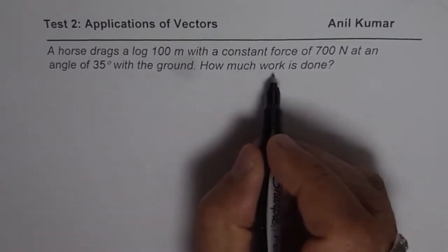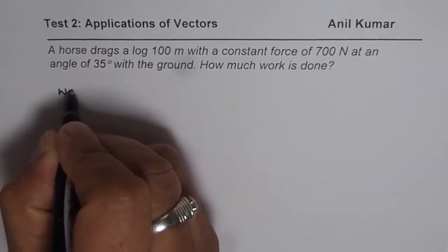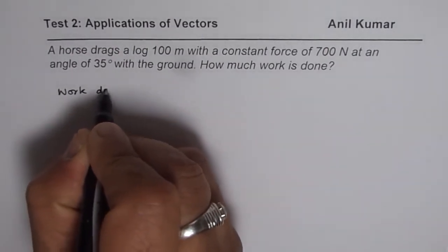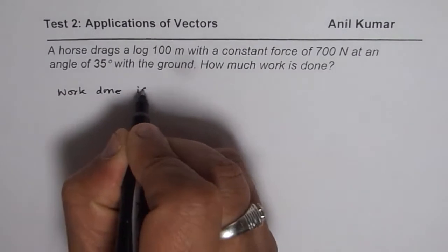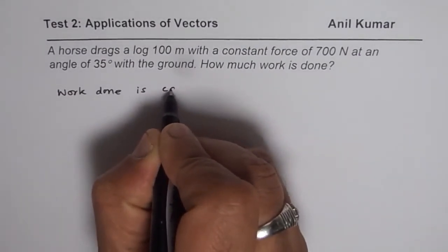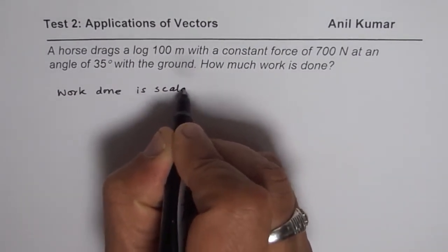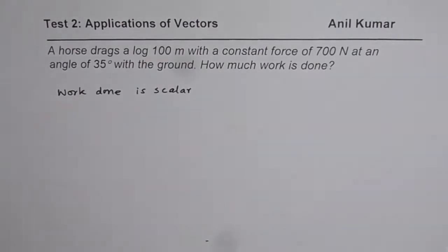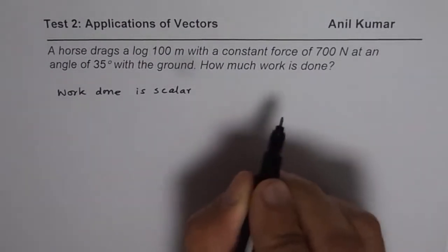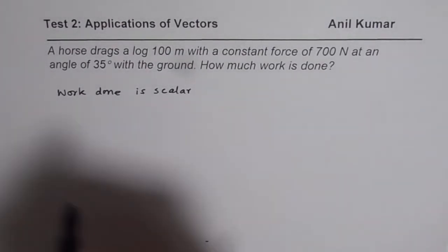As you know, work done is a scalar quantity. So what we know is work done is scalar. And work done you can find with dot product. Dot product also gives you work done.